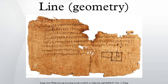Definitions versus descriptions: all definitions are ultimately circular in nature since they depend on concepts which must themselves have definitions, a dependence which cannot be continued indefinitely without returning to the starting point. To avoid this vicious circle, certain concepts must be taken as primitive concepts — terms which are given no definition. In geometry, it is frequently the case that the concept of line is taken as a primitive. In those situations where a line is a defined concept, as in coordinate geometry, some other fundamental ideas are taken as primitives.